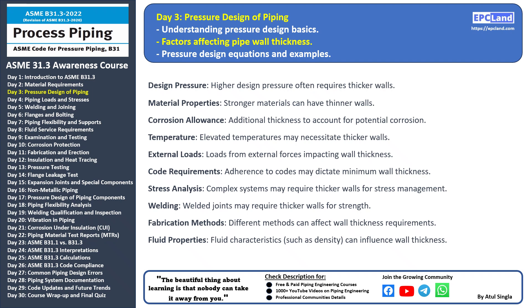Material properties also impact wall thickness — stronger materials may allow for thinner walls, while weaker materials may necessitate thicker walls to handle the same pressure. To account for potential corrosion over the system's lifespan, an additional thickness known as corrosion allowance is added to the pipe's wall. Elevated temperatures can affect material strength and expansion, potentially requiring thicker walls to accommodate thermal stresses.